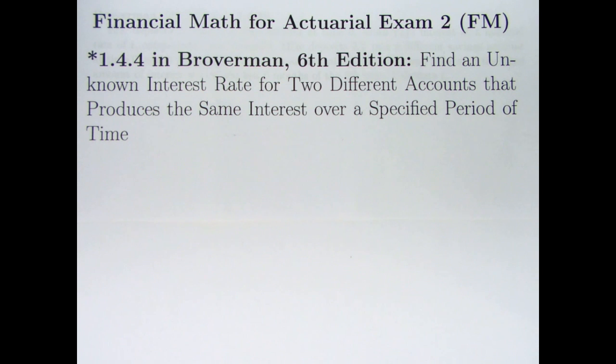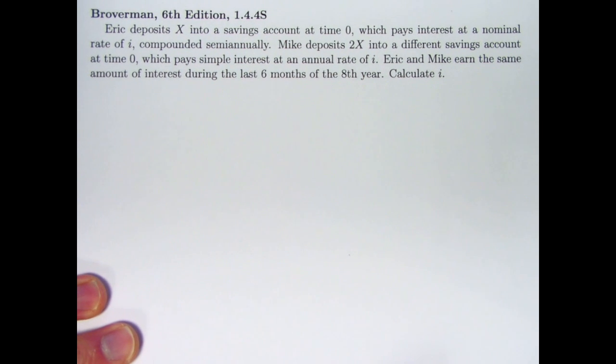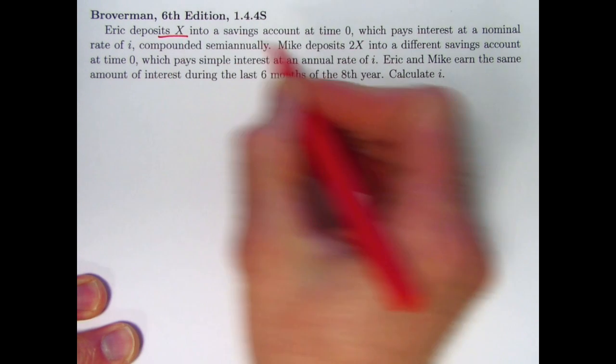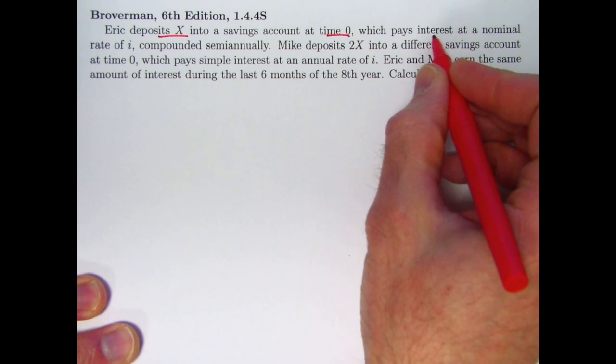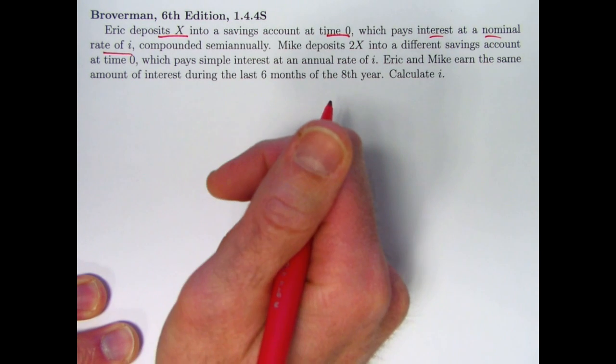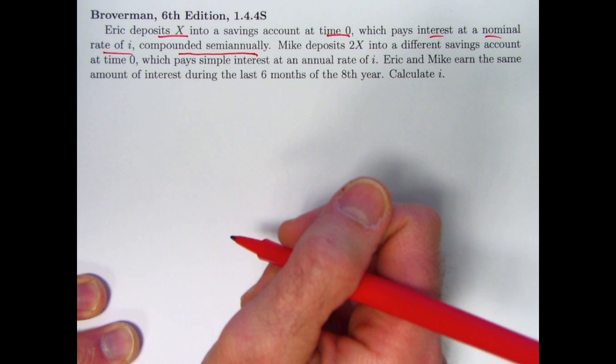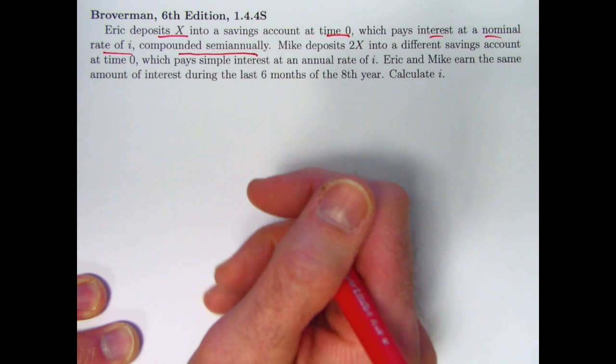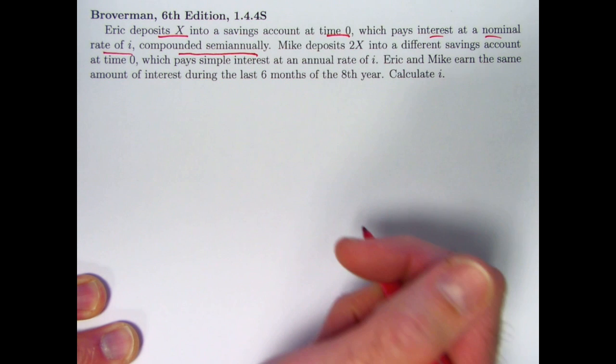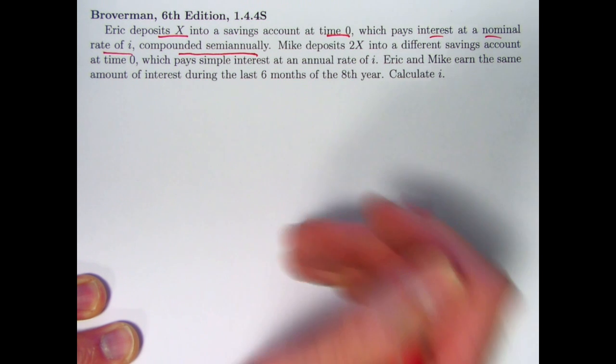There's going to be an unknown i interest rate that for two accounts is going to represent two different things. For one account, it's going to represent a compound interest rate that's nominal, and compounding is going to occur more than once per year. And for the other account, it's going to be a simple interest rate.